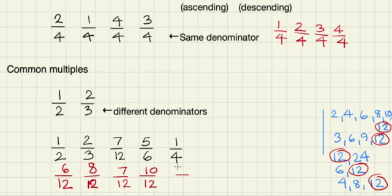And then finally, 4. How many times do we have to multiply 4 to make 12? 3 times. So 3 4s are 12. And the same number 3 that we multiply 4 by, we need to multiply the 1. So 3 1s are 3.